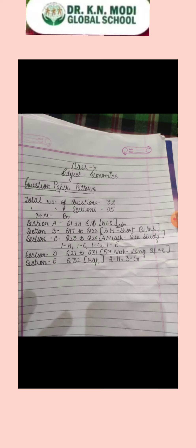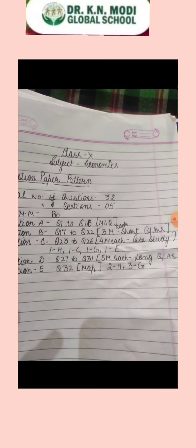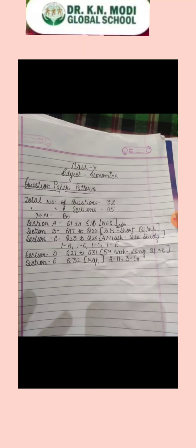Next, let's look at Section A. Question number 1 to question number 16 will be in the MCQ form. MCQ means multiple choice questions — but it doesn't mean you will only tick the correct answer. It can include picture-based questions, matching, fill in the blanks, true or false, full forms — anything. It is a mix from Civics, Geography, and Economics.